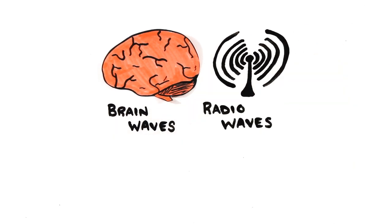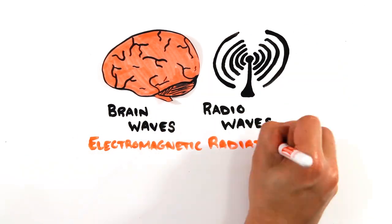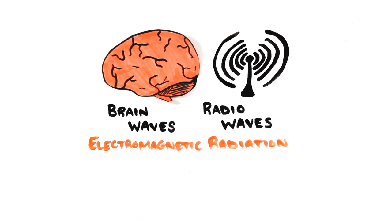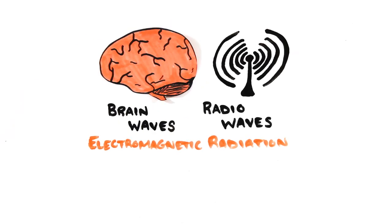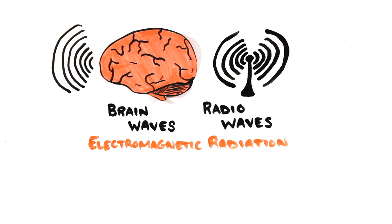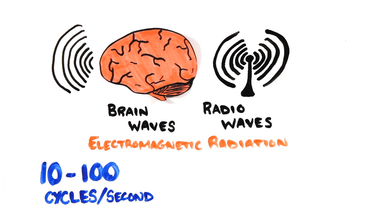The answer is yes. Both brain and radio waves are forms of electromagnetic radiation that travel at the speed of light. Every time you think, thousands of neurons fire at the same frequency and generate a wave. These waves oscillate at around 10 to 100 cycles per second.